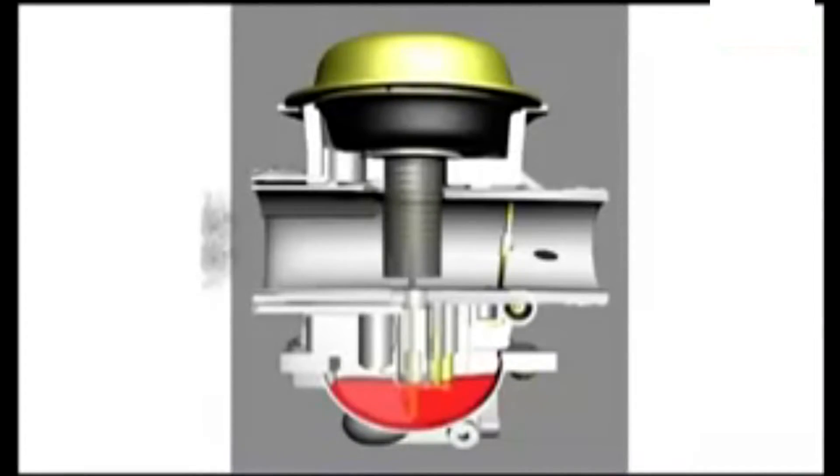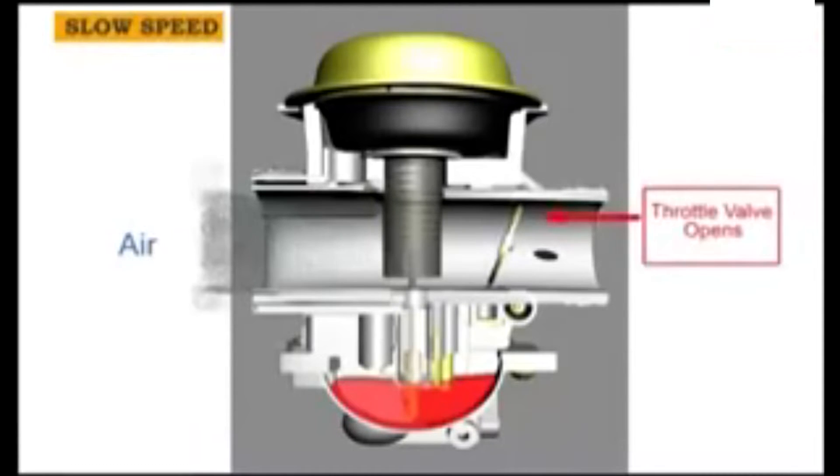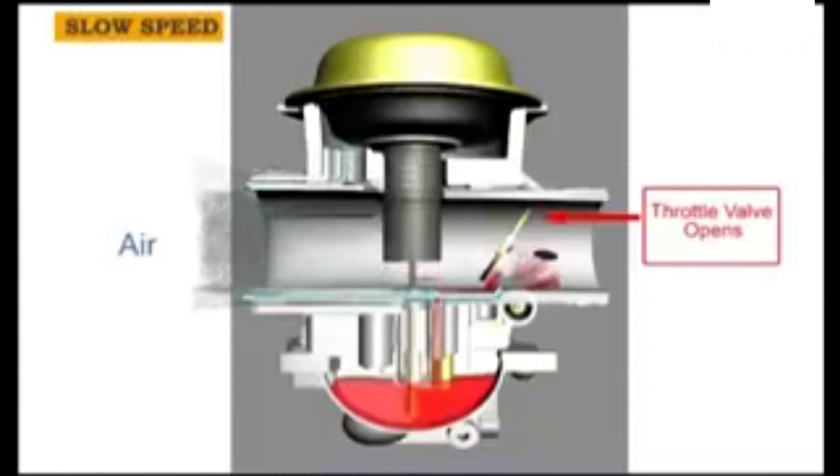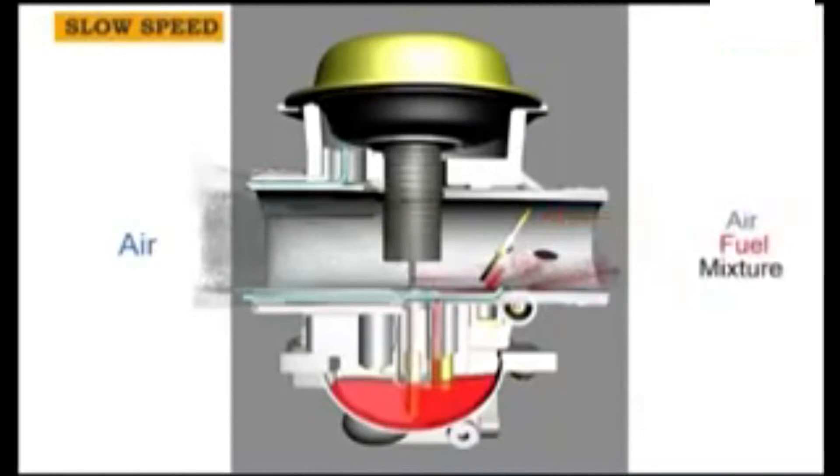Now, let's look at slow speed operation. Air entering the carburetor also enters the air jet, which sucks fuel up through the pilot jet. And as the slide is opening, a little bit of fuel begins to come out the main jet, but it's metered by the jet needle.